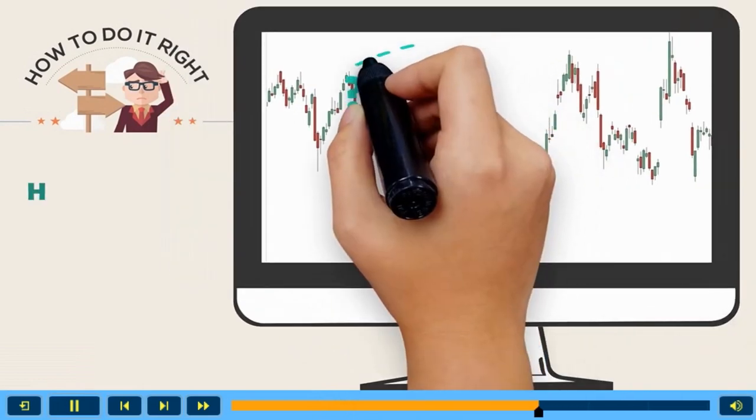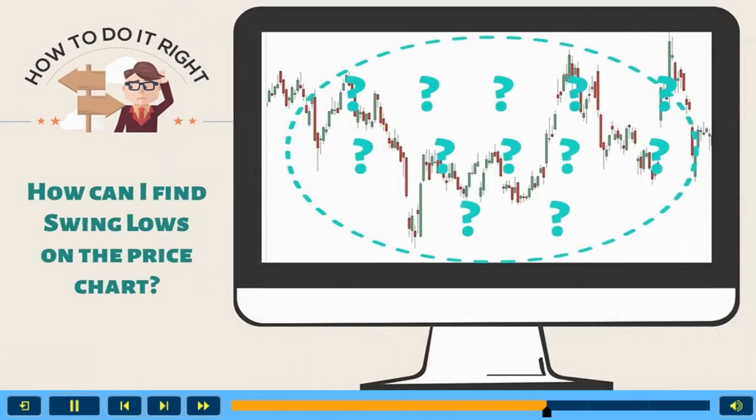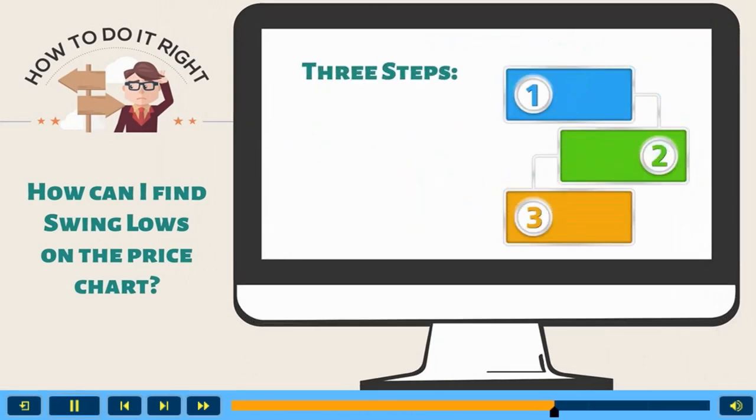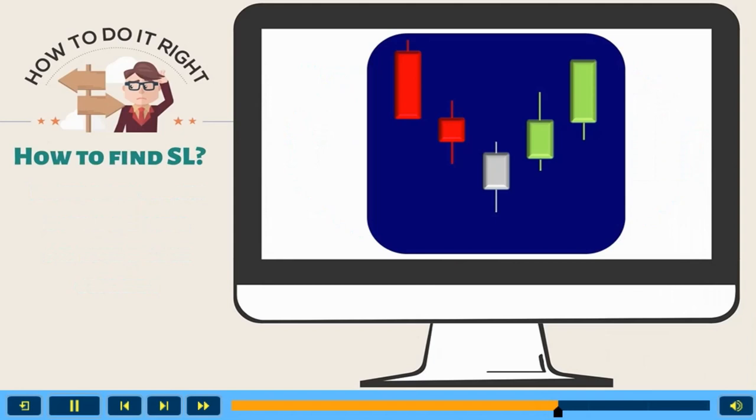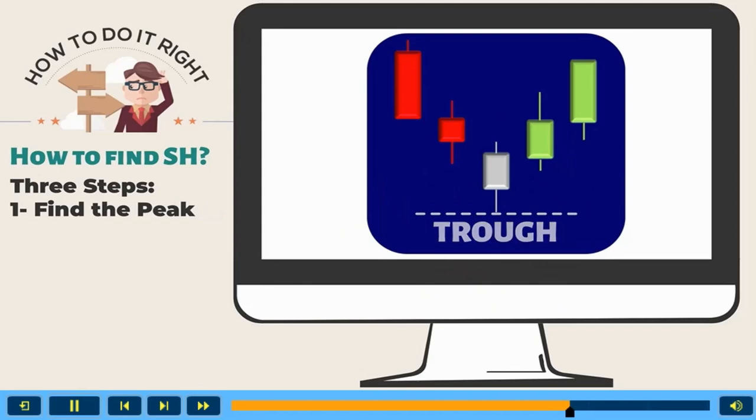Are there any rules to find swing lows on the price chart easily? Sure, use these three simple steps to identify any swing low quickly. Step 1, find the trough candle. The trough candle is the one that has the lowest low amongst all other candles. Then mark the trough candle as zero.